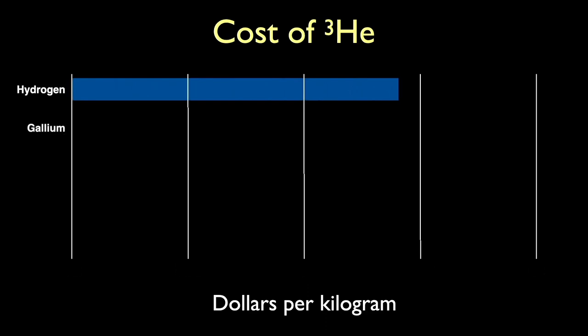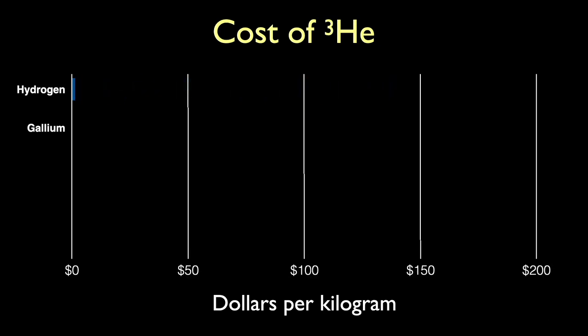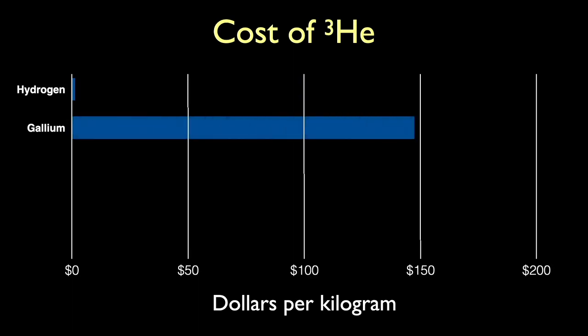To add the next element to our comparison, gallium, we have to multiply the range of our chart by 100 times. This changes the size of the hydrogen bar by a factor of 100 as well. On this chart, gallium is $148 per kilogram. Still not outrageous, but for comparison, let me add helium-4 at $24 per kilogram to this slide only.